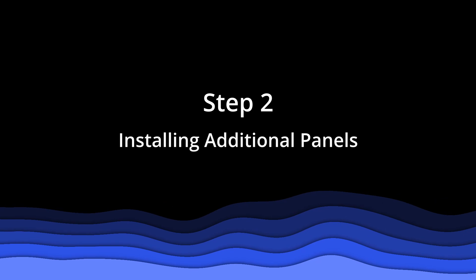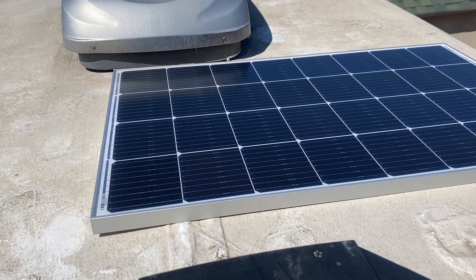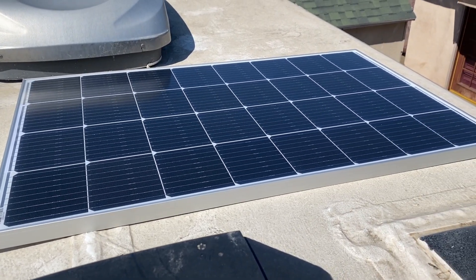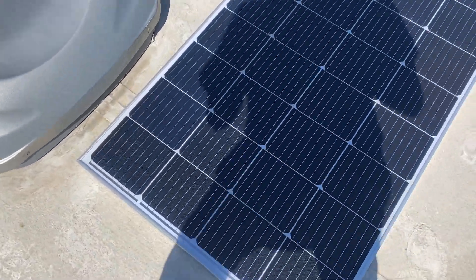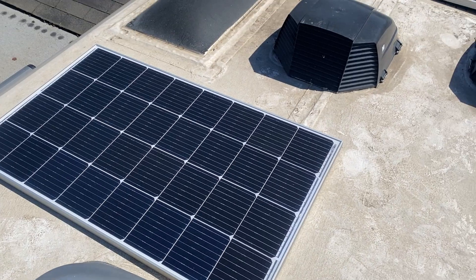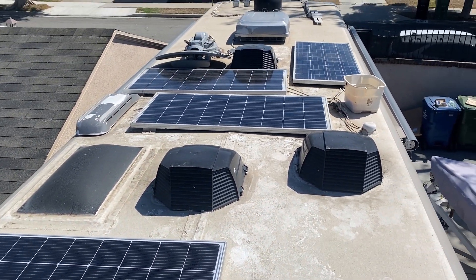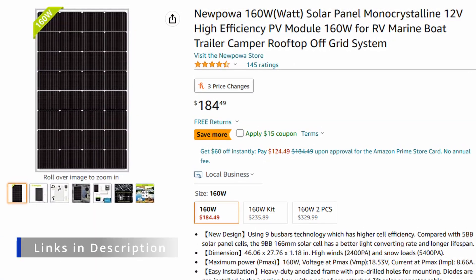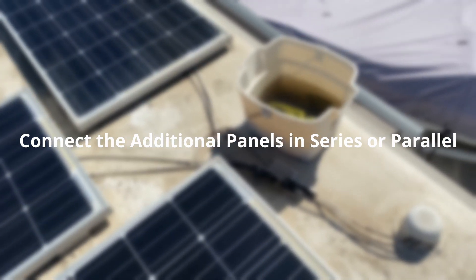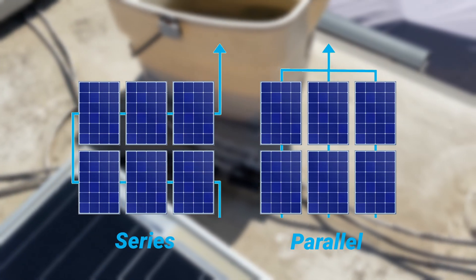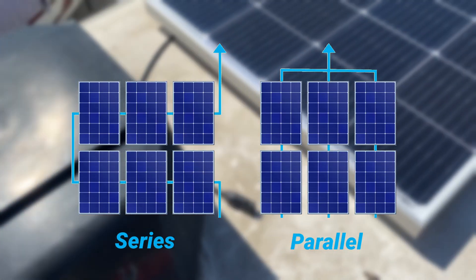Step two installing additional panels. When installing additional panels you want to make sure that you match your current panels as best as you can. In this case my client has 160 watt panels on the roof so I'm going to buy three more 160 watt panels to add on to the three that's already up there. Now we need to connect the panels in either series or parallel.